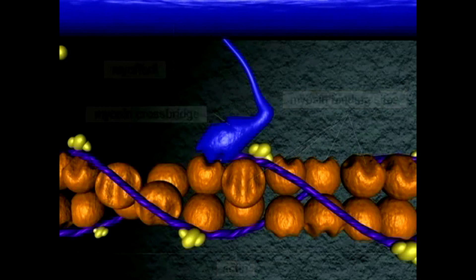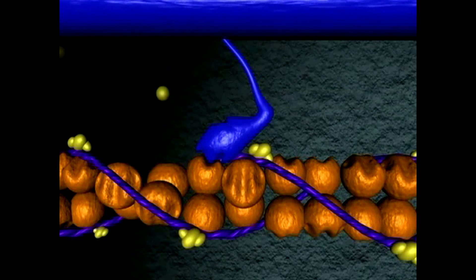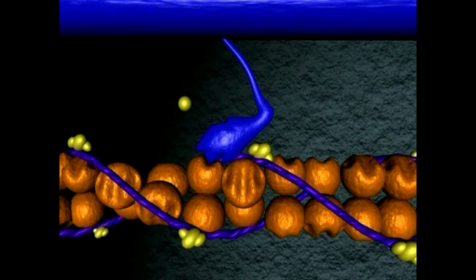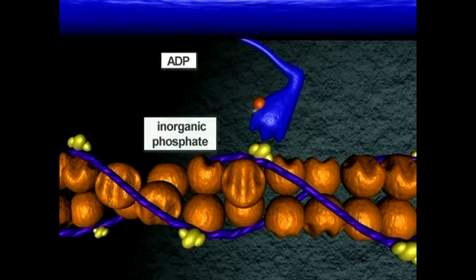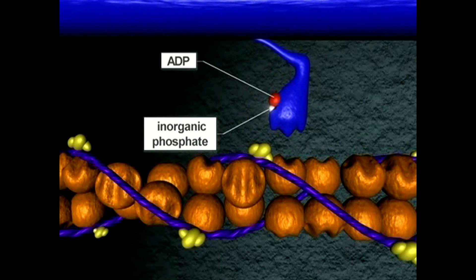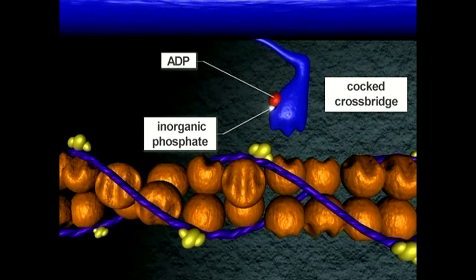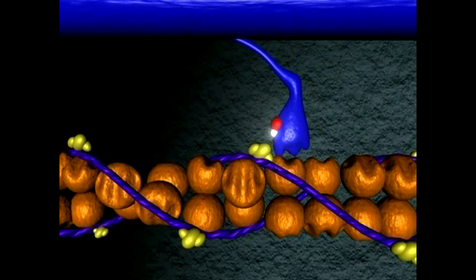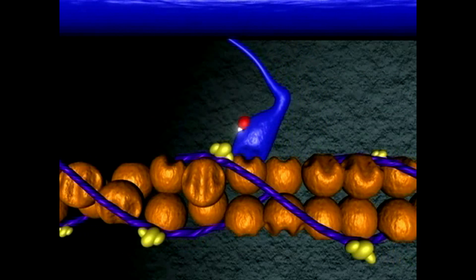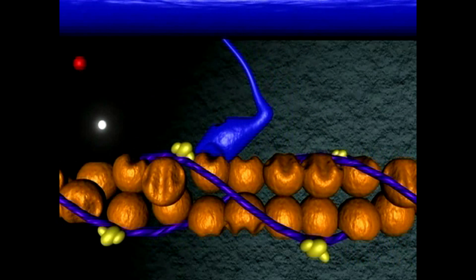Release of the myosin crossbridge from actin requires binding of ATP. After ATP binds, it is split to ADP and inorganic phosphate. The energy derived from this reaction is utilized to cock the crossbridge in preparation for the power stroke. The power stroke is initiated when the myosin crossbridge binds to actin.